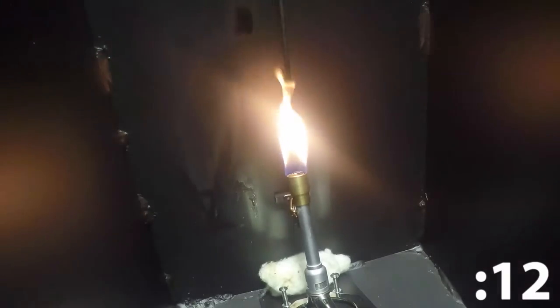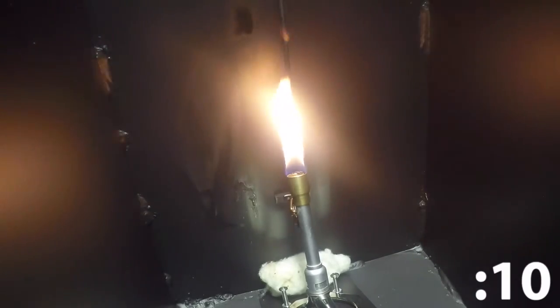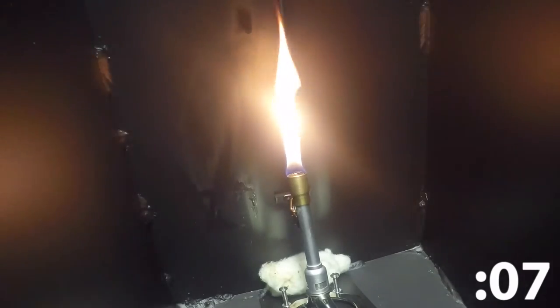The second sample's jacket is charred and hardened around the core after the flame application. This is the desired effect from a flame-retardant cable jacket.